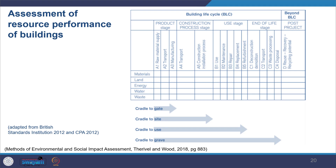The diagram showing assessment of resource performance of buildings, adopted from British Standard, looks at the building life cycle and how resources are consumed at all stages. At the product stage: raw material supply, transport, manufacturing. At the construction stage: transport, construction, installation. At the use stage: use, maintenance, repair, replacement. At the end-of-life stage: deconstruction, demolition, transport, waste processing. Post-project: recycling, recovering, and reusing all materials.